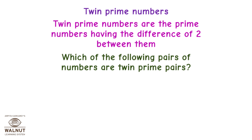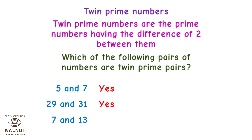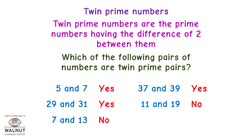Which of the following pairs of numbers are Twin Prime Pairs? 5 and 7? Yes. 29 and 31? Yes. 7 and 13? No. 37 and 39? Yes. 11 and 19? No. 3 and 5? Yes.